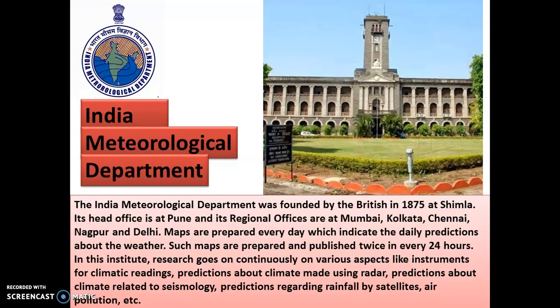Coming to the Indian Metrological Department: it was founded by the British in 1875 at Shimla. This is the building of that Shimla office. Its head office is at Pune and its regional offices are at Mumbai, Kolkata, Chennai, Nagpur and Delhi — so almost all the major cities of India.